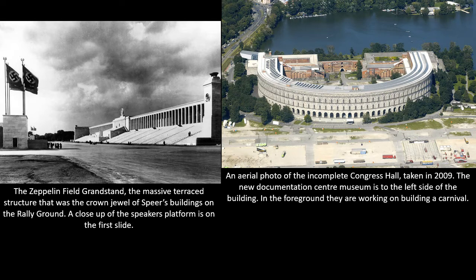Speer also designed a massive street to connect the northern end of the grounds to the southern, bisecting the two lakes in the park. The Große Straße was completed in 1939, just over 2 kilometers long and 40 meters wide. Designed as a parade road and made out of granite in black and gray, it was never used due to the outbreak of the war, but it remains in the park today.